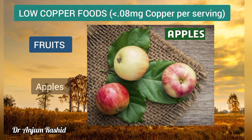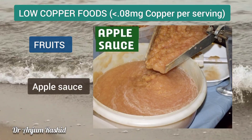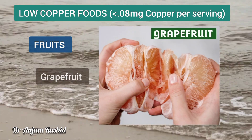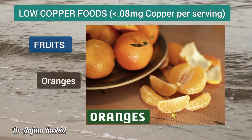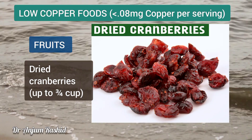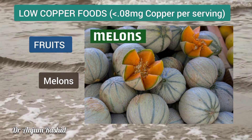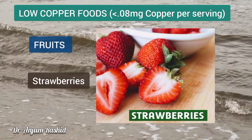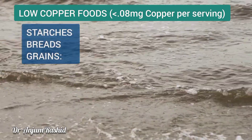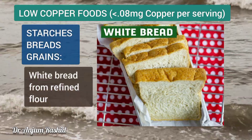Low copper fruits include most fruits such as apples, applesauce, blueberries, cherries, grapes, oranges, dried cranberries (up to ¾ cup), peaches, plums, melons, strawberries, and watermelon.